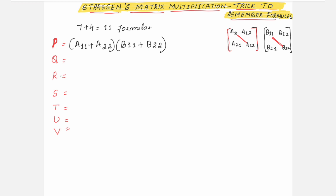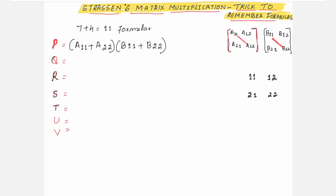Next, we write down for Q, R, S, and T. For all these four, you need to first write like this to remember: simply write the element positions 11, 12, 21, 22. Now you start writing the formulas. For Q, you go from left to right. For R, it is from top to bottom. For S, it is from bottom to top. And T is also from left to right.